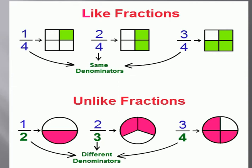Students, there are more examples of like fractions and unlike fractions where we have more than two fractions. For example, 1 by 4, 2 by 4, and 3 by 4. In these three fractions, the denominator 4, 4, and 4 is the same. So this is the example of like fractions.